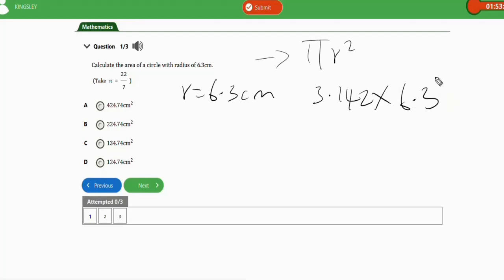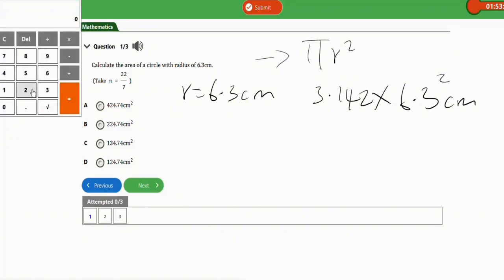Now let's punch this on the calculator to see what it's going to give us. This is your JAMB calculator. We have 3.142 times 6.3 times another 6.3 because of the square, so we have the output to be 124.7. So the answer is option D, 124.7 cm². It's as simple as this.